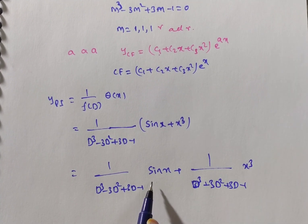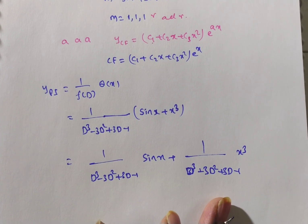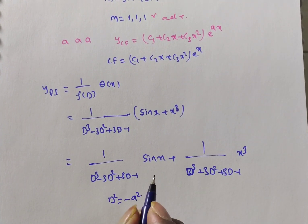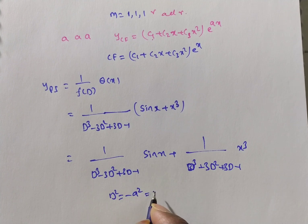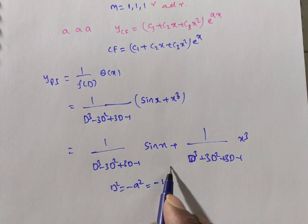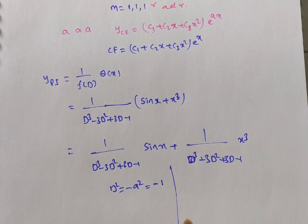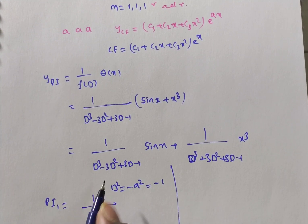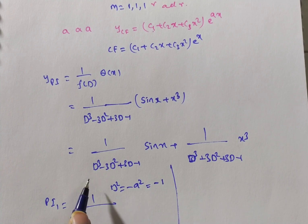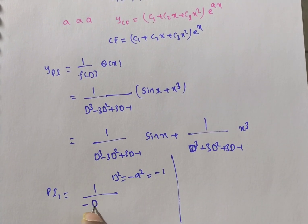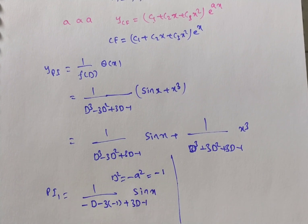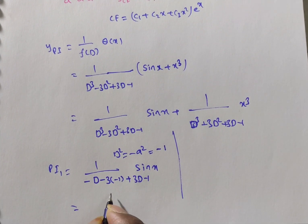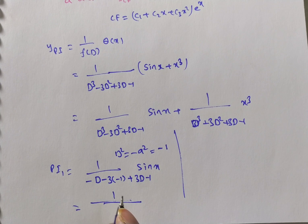For PI₁ = 1/(D³ - 3D² + 3D - 1) · sin x: whenever sin(ax) appears, replace D² with -a². Here ax = x so a = 1, meaning D² = -1. D³ = D·D² = D·(-1) = -D, and -3D² = -3(-1) = +3. So the denominator becomes -D + 3D - 1 = 2D + 2, giving PI₁ = 1/(2D + 2) · sin x.